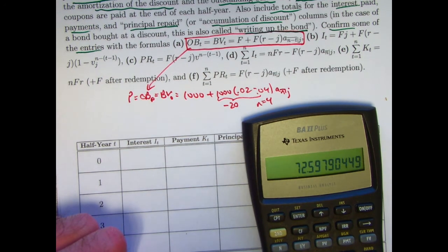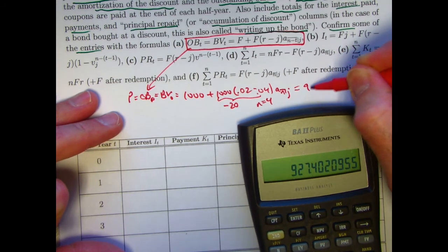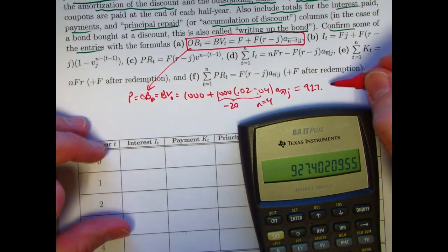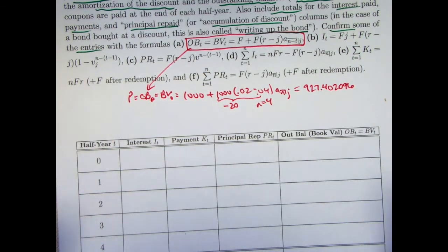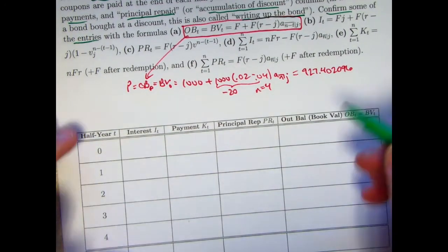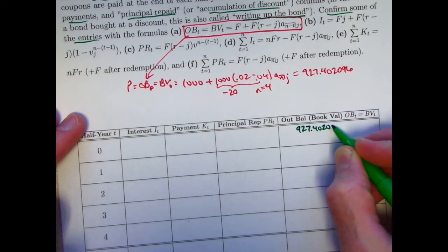Times 20, this is what you would subtract from the 1,000 to see the price is bought at a discount. And I made it in such a way that this discount is the same monetary value as the premium was in the last couple videos. I'm going to go ahead and carry more decimal places, six decimal places, even though I don't have to.